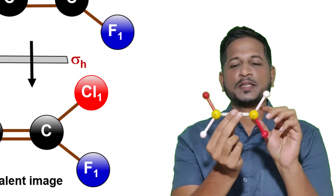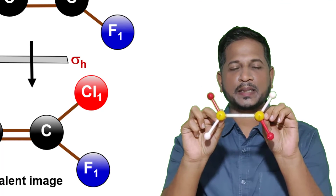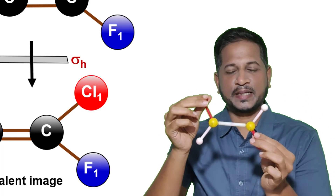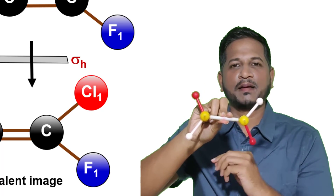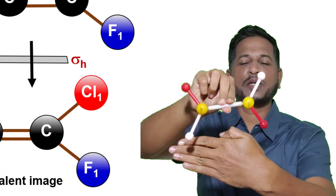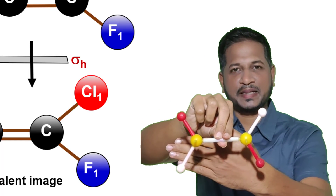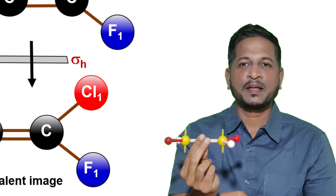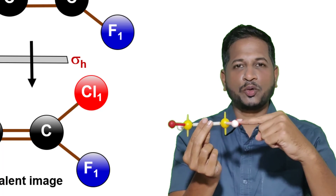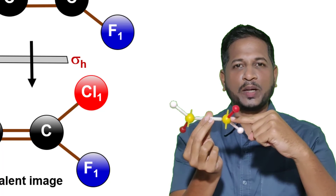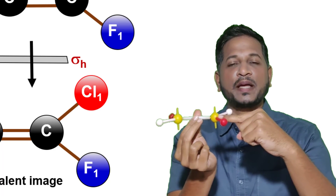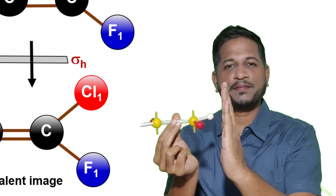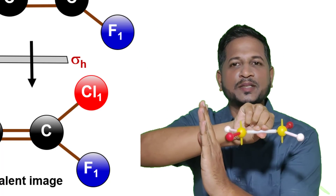Let's understand with the help of a 3D molecule. This is the double bond between two yellow carbon atoms; these two white atoms are the chlorine atoms and these two red atoms are the fluorine atoms. If I rotate the molecule through 180 degrees followed by reflection in a plane perpendicular to the rotational axis of symmetry, I will get an equivalent image. If this is the molecule and this is the rotational axis of symmetry, rotating through 180 degrees gives this image, and taking the reflection perpendicular to the rotational axis gives an equivalent image.